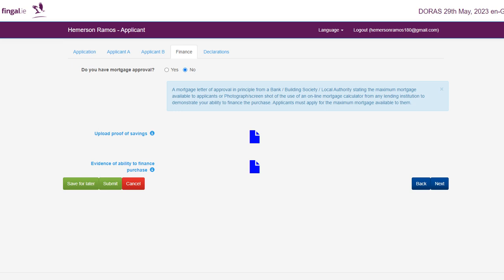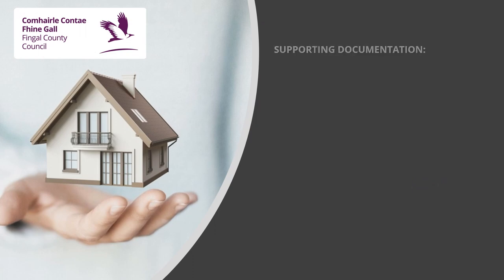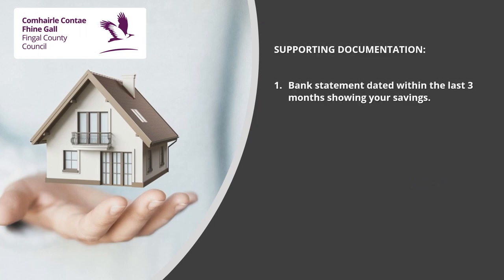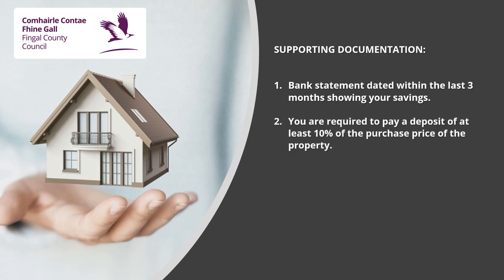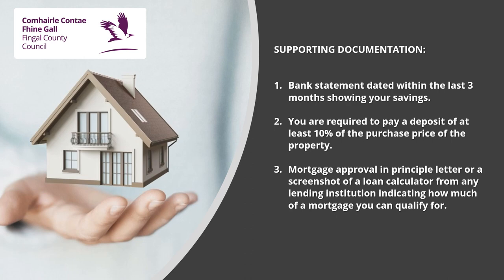After clicking Next, you will be brought to the finance tab. Here you are asked to provide details of how you intend to finance the purchase of the affordable property you are applying for. First, please state whether you have mortgage approval or not. It is recommended that applicants have mortgage approval in principle, or at least be in a position to apply for a mortgage, before applying to purchase an affordable property. Next, please provide a bank statement dated within the last three months showing your savings. You are required to pay a deposit of at least 10% of the purchase price. Please also upload your mortgage approval in principle letter, or a screenshot of a loan calculator from any lending institution indicating how much of a mortgage you can qualify for.